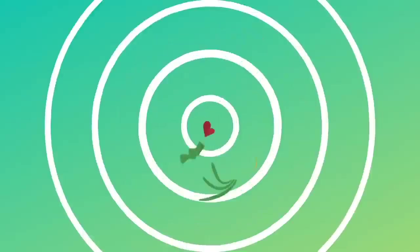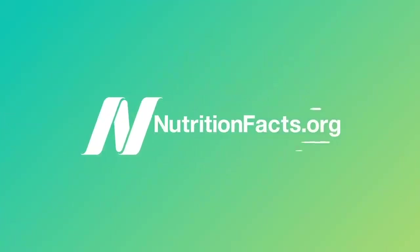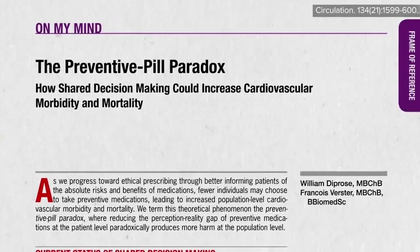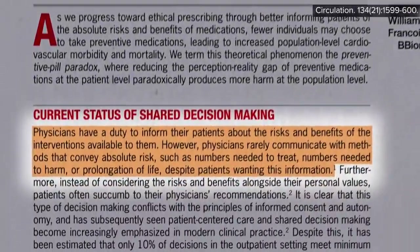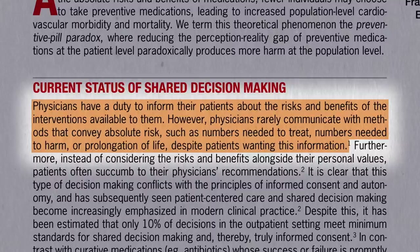What are the risks and benefits of whatever they prescribe? However, physicians rarely communicate the absolute risk numbers, such as numbers needed to treat — in other words, how many people are actually helped by the drug — numbers needed to harm — how many people are actually hurt by the drug — or prolongation of life: how much longer will it enable you to live, despite patients wanting all this information?